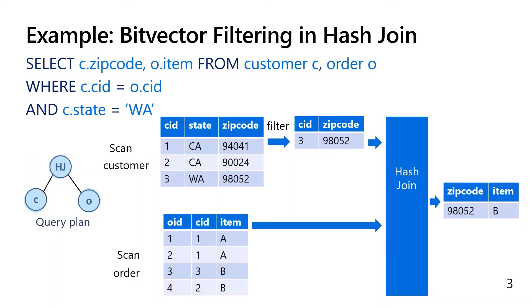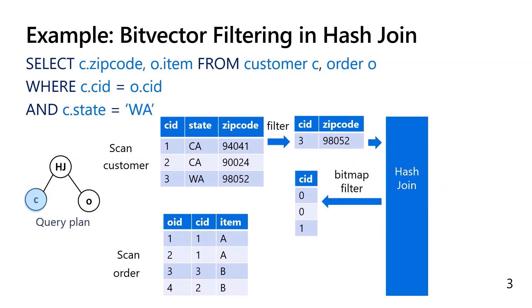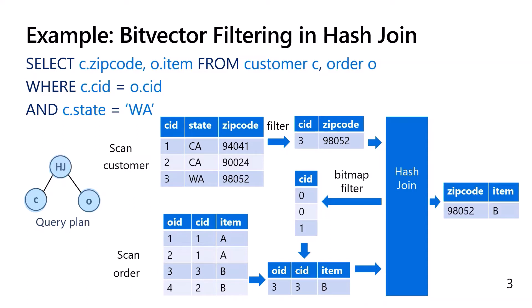If we step back and look at the build side of the hash join, after applying the predicate on the customer table, only customer 3 remains. So if we create a bitmap on whether the customer ID passes the predicate, we can use the bitmap to filter out tuples in the order table that do not satisfy the join condition. Now the number of input tuples of the hash join has reduced and its cost decreases. We use an arrow in the query plan to show a bitvector filter is created from the hash join and pushed down to the order table.